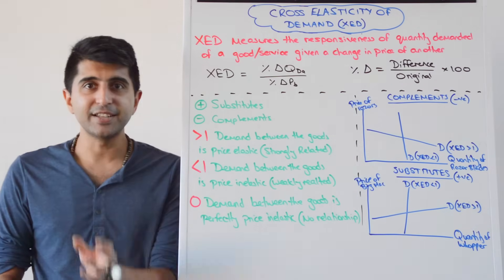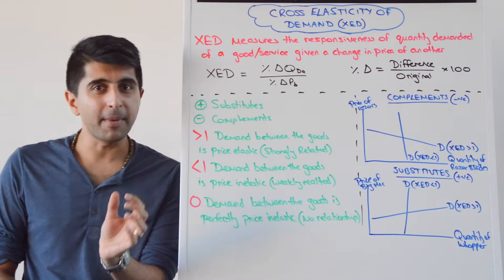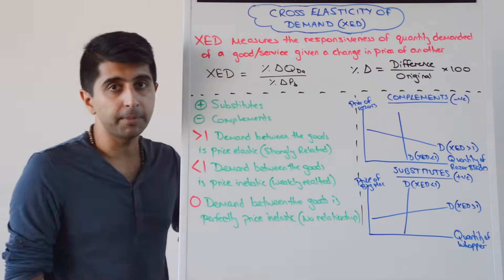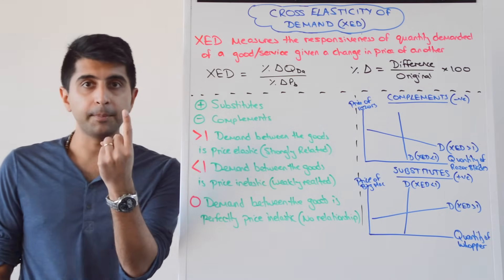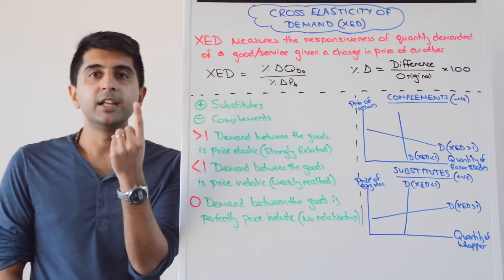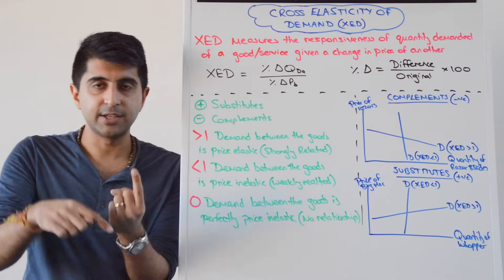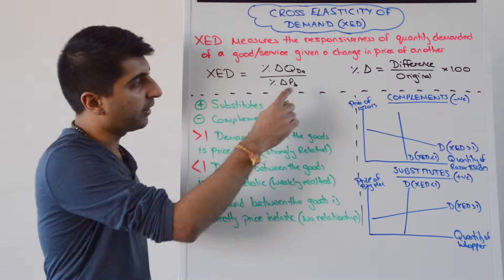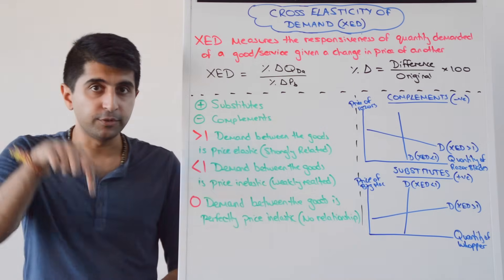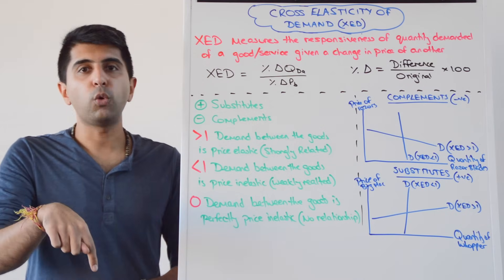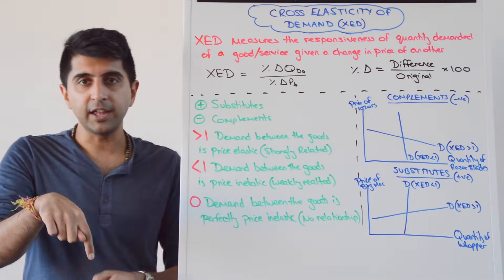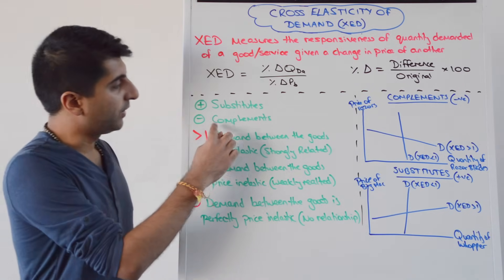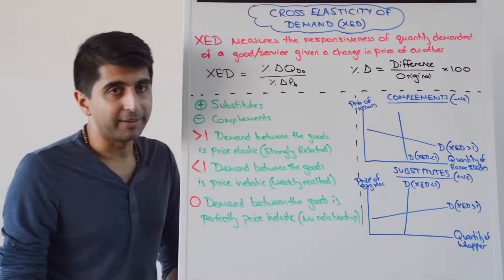Whereas if the figure is negative, it's complementary goods we're working with. If the price of a complement goes up — positive — demand for the other will go down — negative — we get a negative number. And if the price of a complement goes down, quantity demanded for the other will go up, and we again end up with a negative number. So negative means complement.